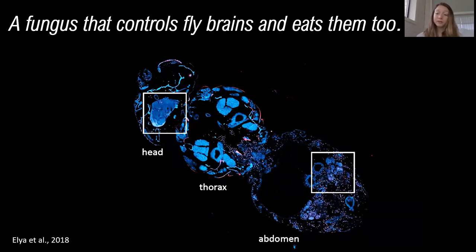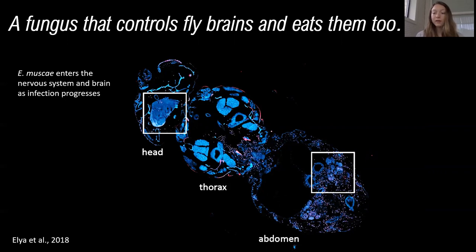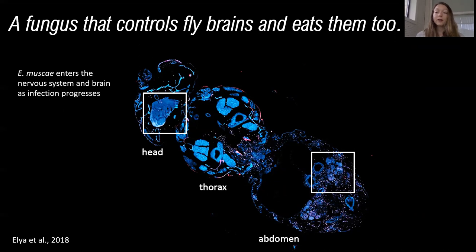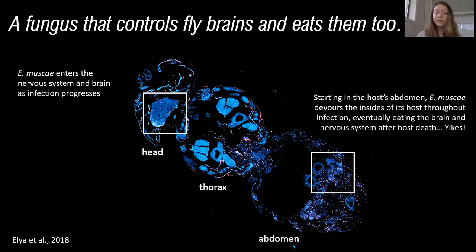E-muskie causes some really interesting behaviors in its fly host, but the really fascinating thing about this parasitic fungus is how it controls such complex behaviors. E-muskie enters the nervous system and brain of a fly as infection progresses. This cross section of an infected fly about to be killed by E-muskie shows fungal cells wherever there is dark staining, and the white box on the top left is surrounding the fly's brain — you can see that there are a lot of fungal cells there. Before manipulating behavior, killing its host, and sporulating to infect new victims, E-muskie uses the body of the fly for sustenance and protection. The white box in the right corner outlines the gut and ovaries of this fly, and you can see that fungal cells are surrounding these organs as well. Starting in the host's abdomen, E-muskie devours the inside of the fly throughout infection, eventually eating the brain and the nervous system after killing its host.